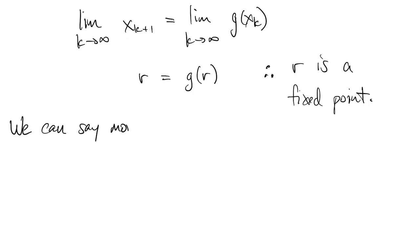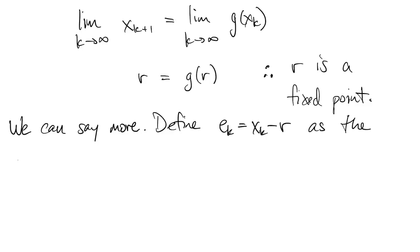But we can actually say more about how quickly we converge to that fixed point. We do that by defining a new sequence of errors. That's the difference between the xk and the final value r of the fixed point.